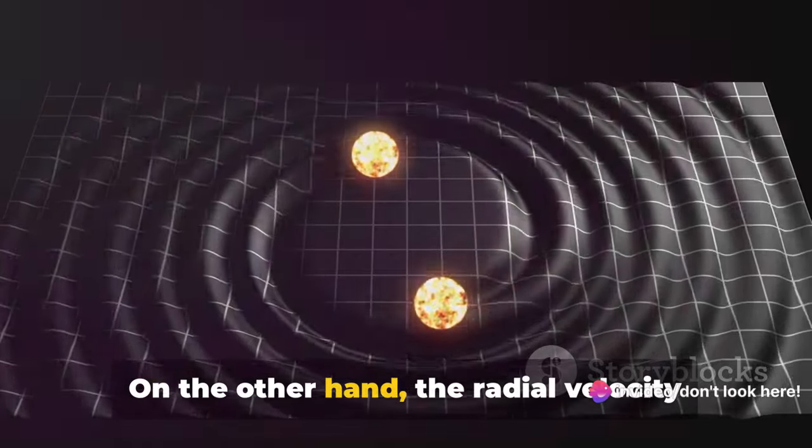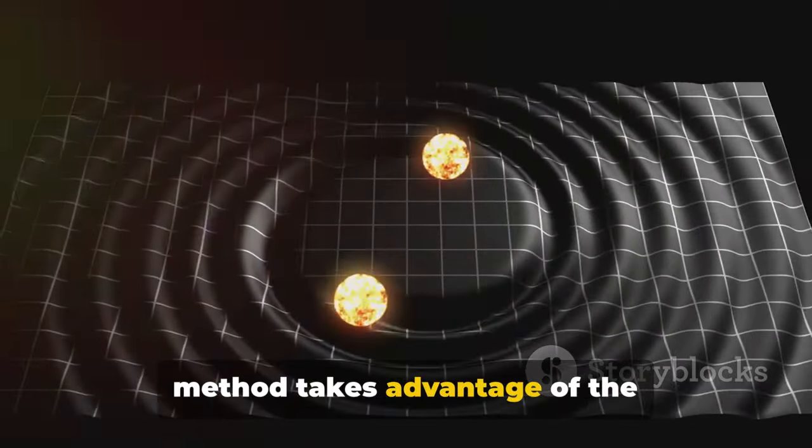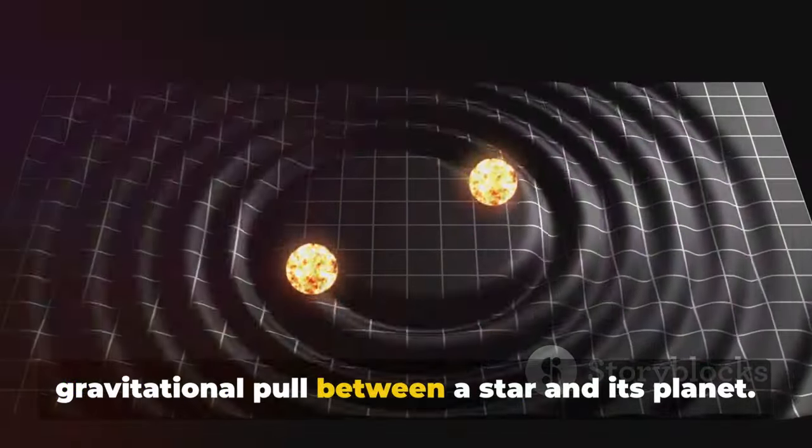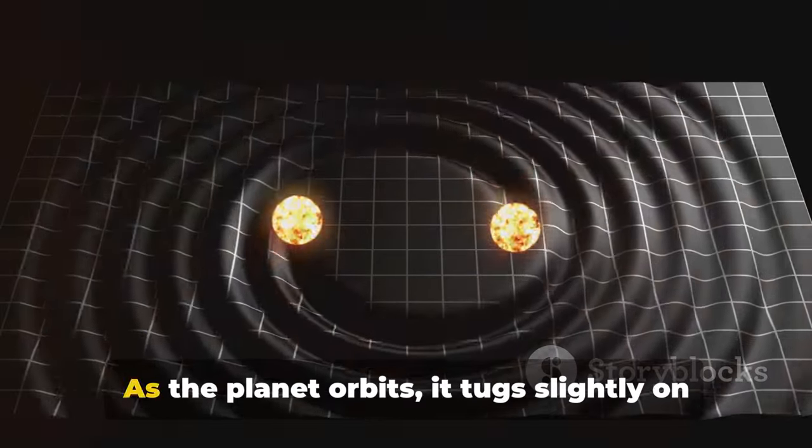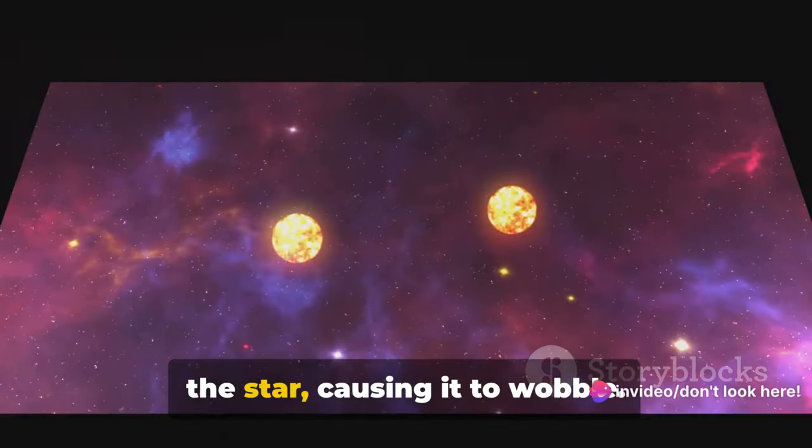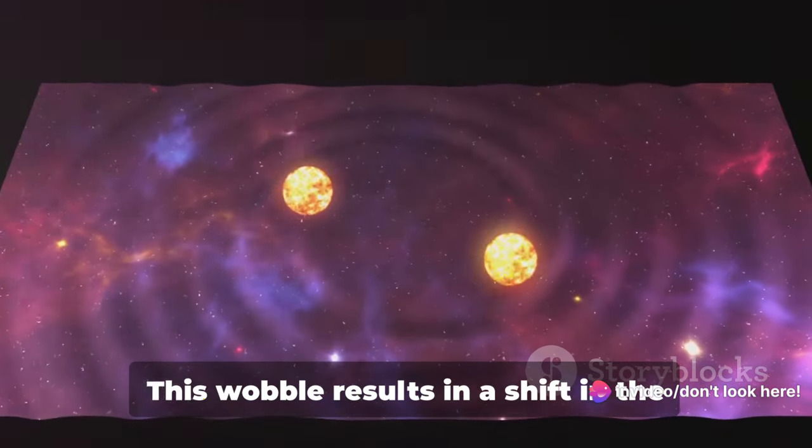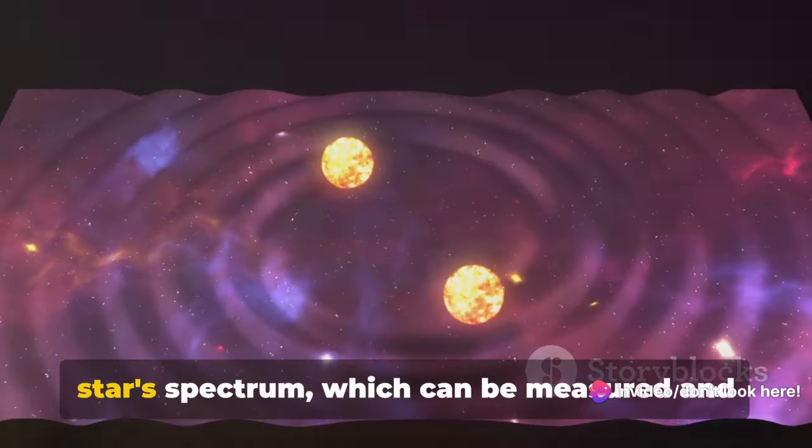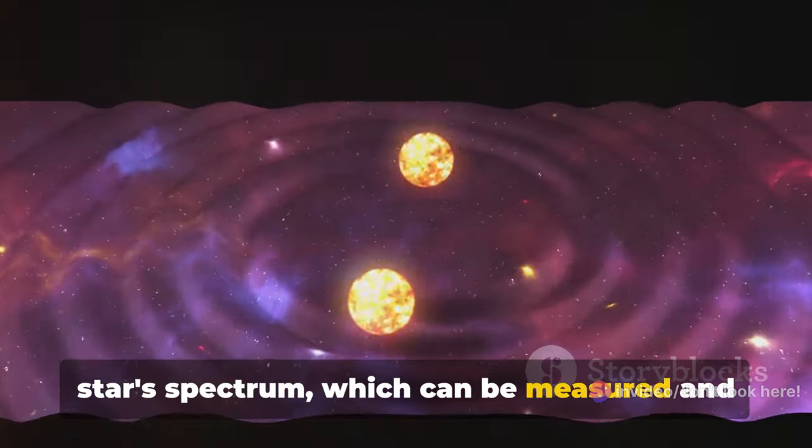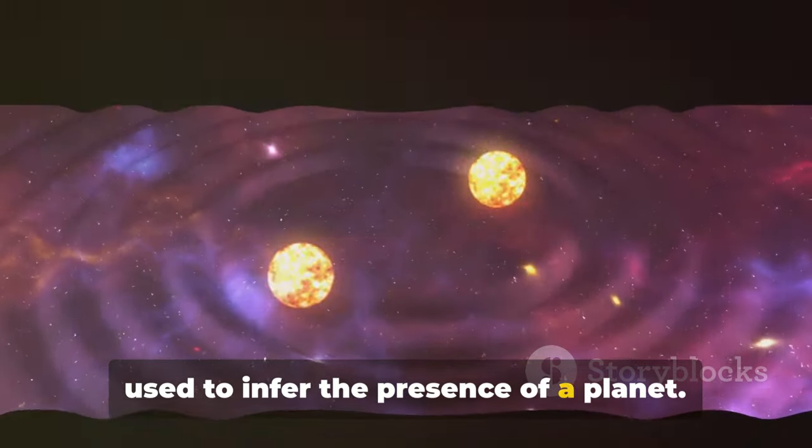On the other hand, the radial velocity method takes advantage of the gravitational pull between a star and its planet. As the planet orbits, it tugs slightly on the star, causing it to wobble. This wobble results in a shift in the star's spectrum, which can be measured and used to infer the presence of a planet.